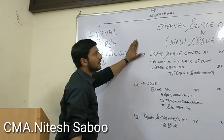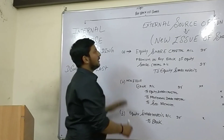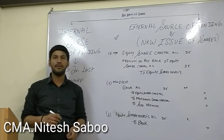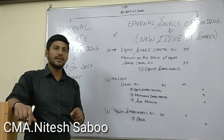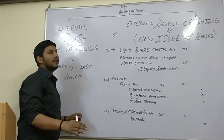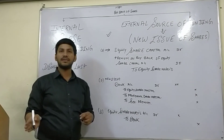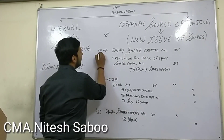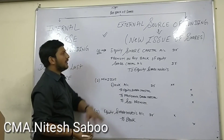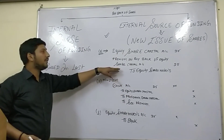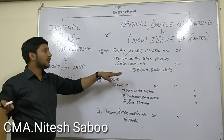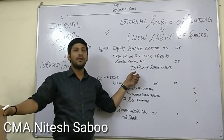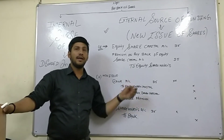We are continuing with the external source of funding. If a company has sufficient internal source of funding not available, then the company can go to a new issue. Today we are talking about some related data. The first entry will be: Equity Share Capital Account debit, Premium on Buyback of Equity Share Capital Account debit, to Equity Shareholder — this is regarding buyback of shares.